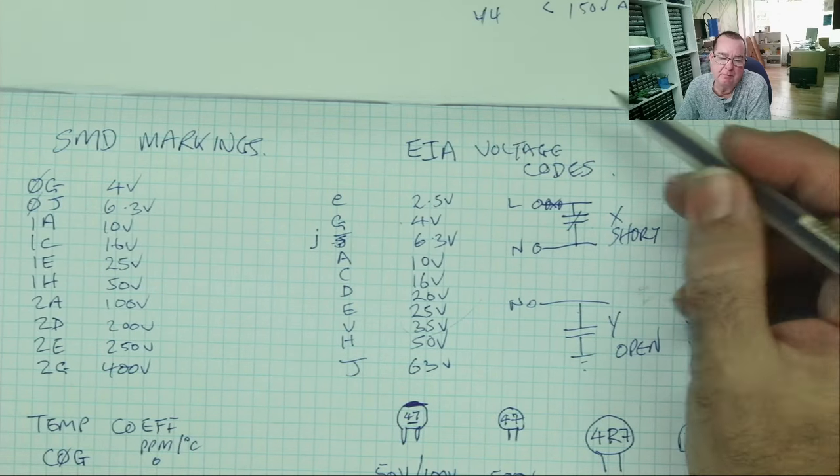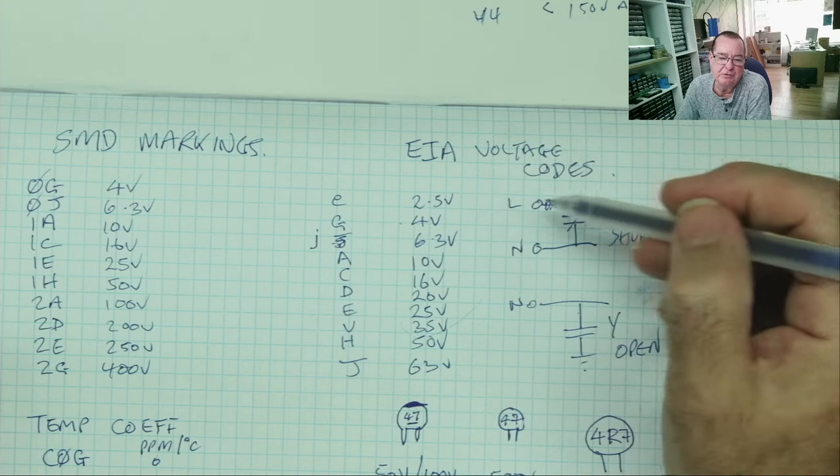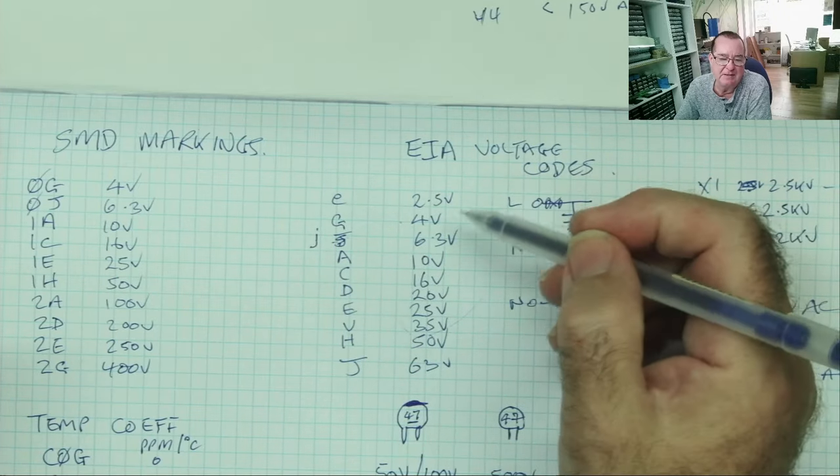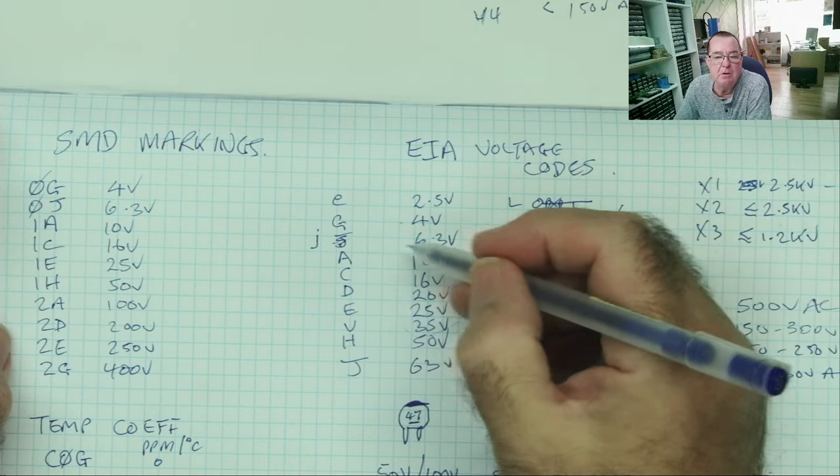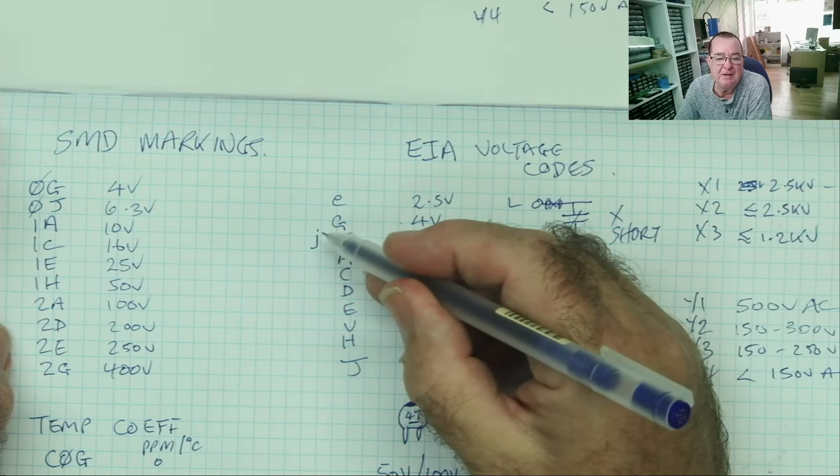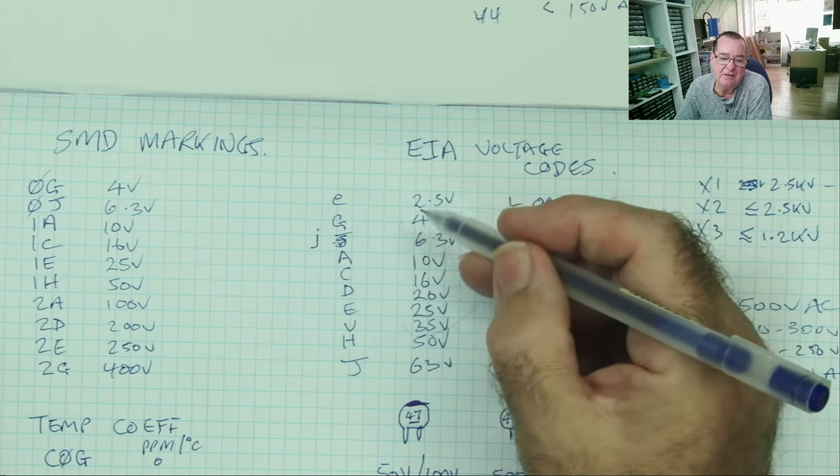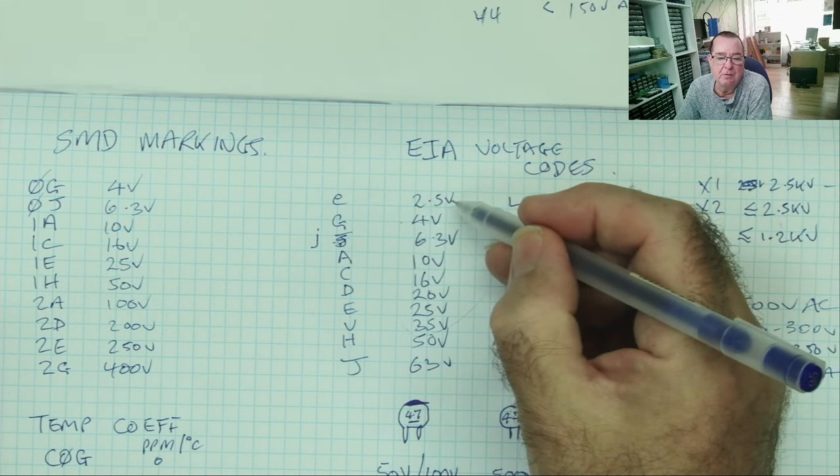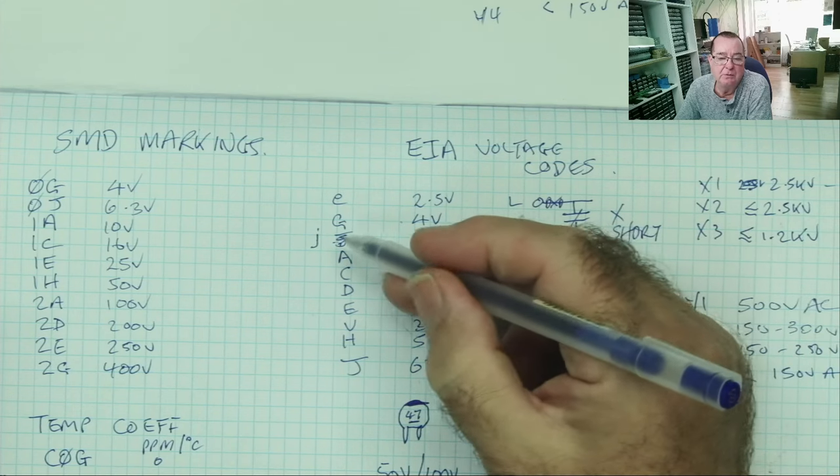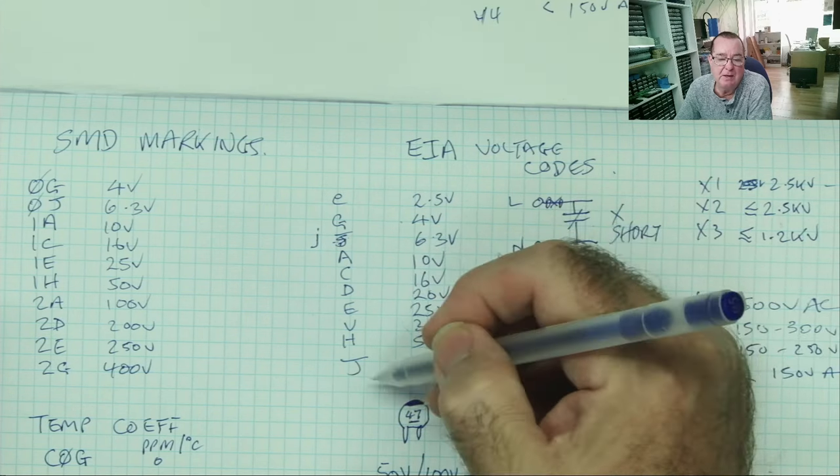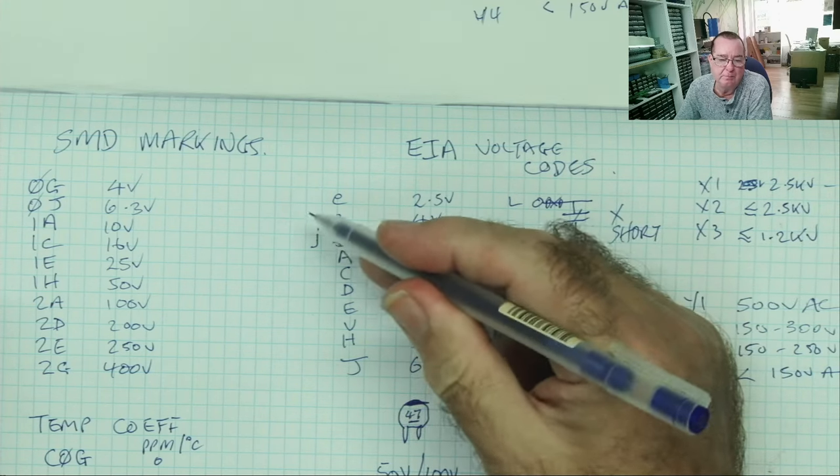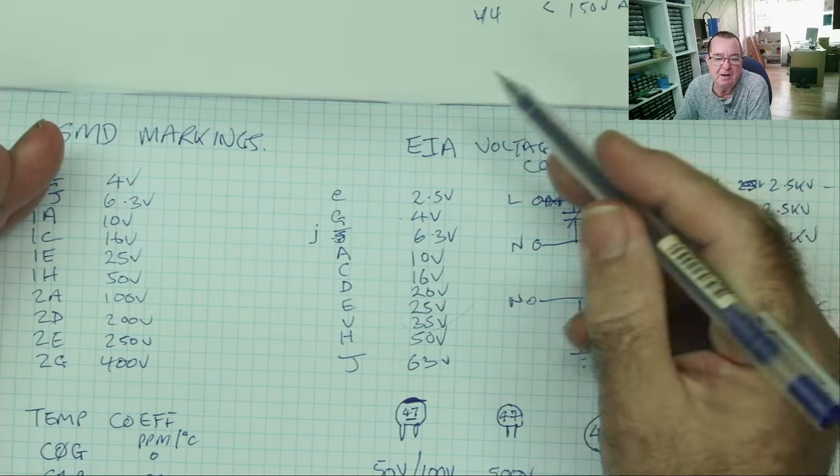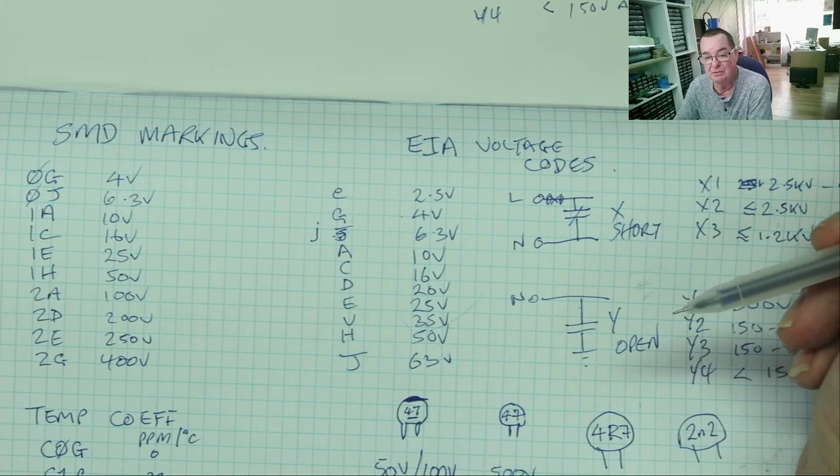One other thing I want to mention from the previous video is this EIA voltage code list. So firstly, this is not a complete list. And secondly, I actually made an error in the list. The code J, if it's a lowercase J, as for example this is a lowercase E, it refers to 6.3 volts. There's some sense in this because lowercase E is 2.5 volts, uppercase is 25 volts, lowercase J is 6.3 volts, and uppercase J is 63 volts. So just be aware of this. We'll look at the full list a little bit later on in this video because this comes into play with the surface mount electrolytic capacitors we're going to look at and tantalum capacitors.